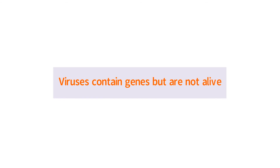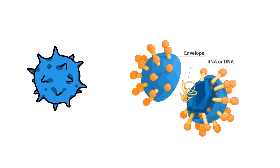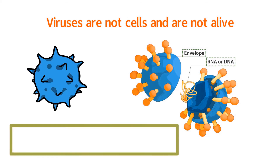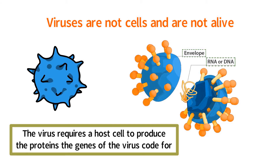Number three: viruses contain genes but are not alive. Viruses are made of DNA or RNA that is contained inside of a protein shell. Additionally, some viruses have membranes around their protein shells. Considering there is little else inside of a virus, viruses are not cells and are not alive. If viruses are not cells, the question may arise: how are the proteins the viral DNA and RNA code for ever to be produced? The answer is the virus requires a host cell to produce the proteins the genes of the virus code for.